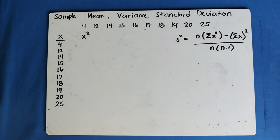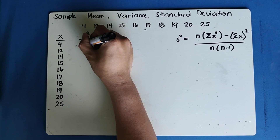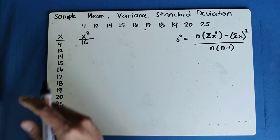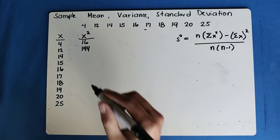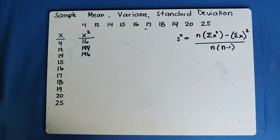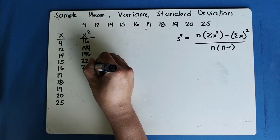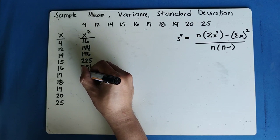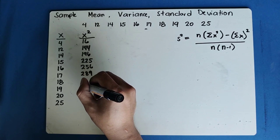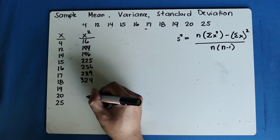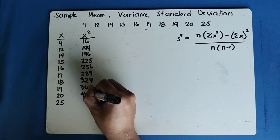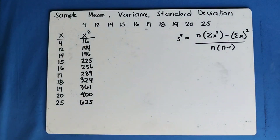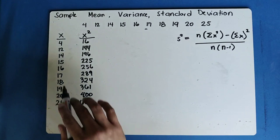4 squared is 16; 12 squared is 144; 14 squared is 196; 15 squared is 225; 16 squared is 256; 17 squared is 289; 18 squared is 324; 19 squared is 361; 20 squared is 400; and 25 squared is 625. We simply squared each data value.